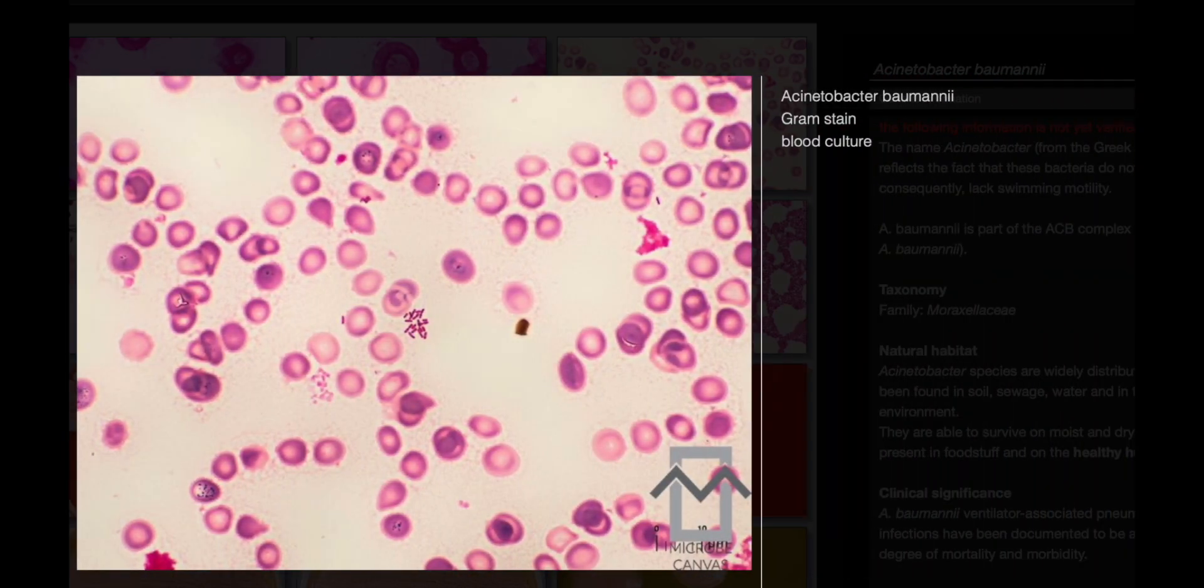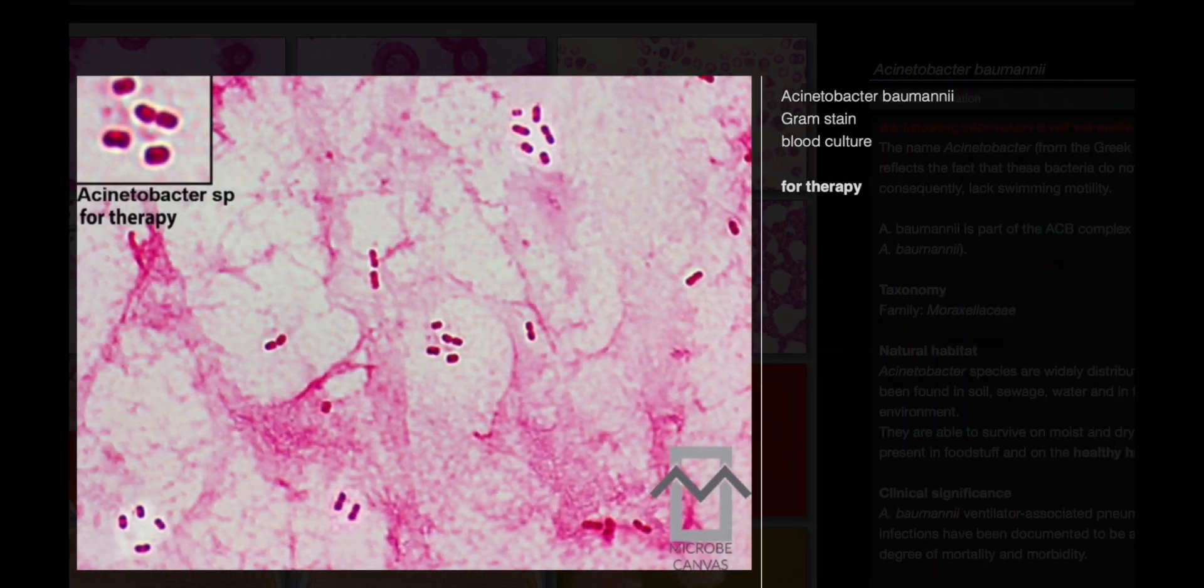Acinetobacter baumannii belongs to the ACB complex, which also includes Acinetobacter calcoaceticus. These bacteria are classified under the Moraxellaceae family.